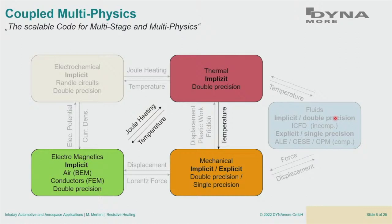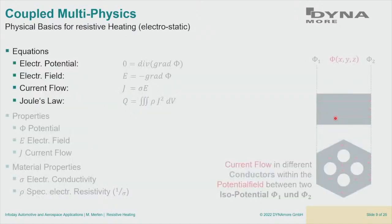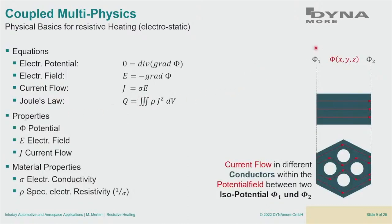If we think about what to add to an existing hot forming simulation, we just need to add the heating part. For the electrostatic case we have these equations. The FE part solves for the electric potential. If we know the potential, we can calculate the electric field. With the electric field and one material property — electrical conductivity — we can calculate the current flow. That current flow then acts as a heat source via Joule's law, which feeds into the thermal solver. I like pictures more than equations: we calculate the potential field between two potentials, then current flow, then heating.